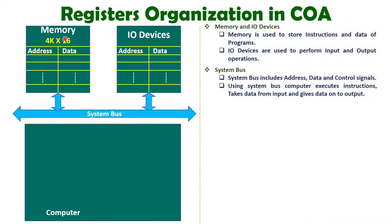The system bus includes the address bus, data bus, and control signals. The memory size is 4K×16. 4K means 4 is 2 to the power 2 and K means 2 to the power 10, so in total there are 2 to the power 12 number of addresses. That means 12 address lines are there with this memory in the system bus. Cross 16 means there are 16 data lines, because at one address 16 bits of data are stored. So in total, 12 address lines and 16 data lines are interfaced in this system bus.